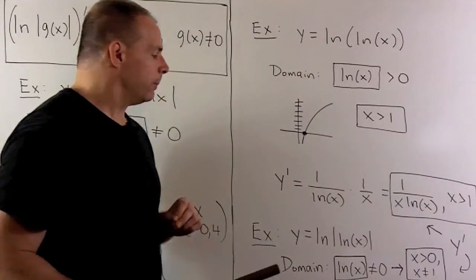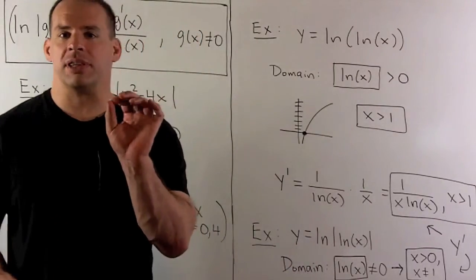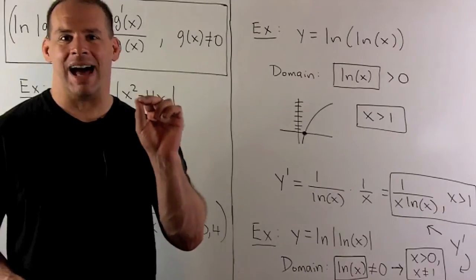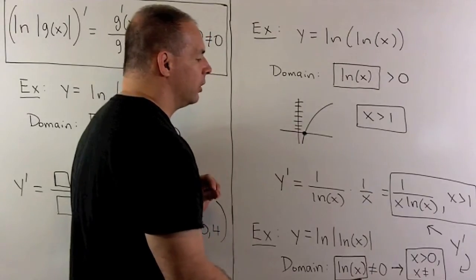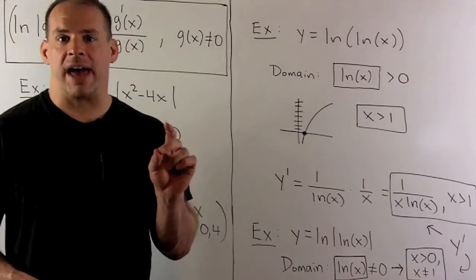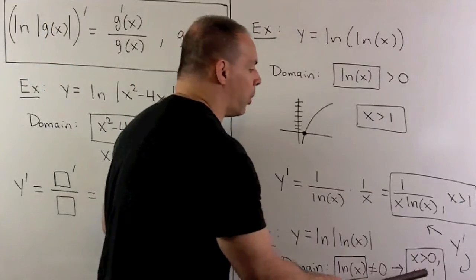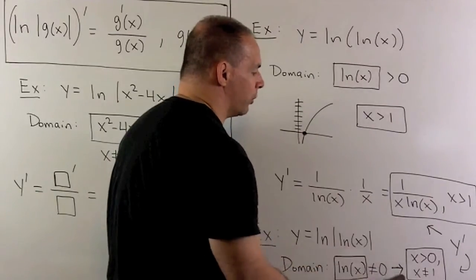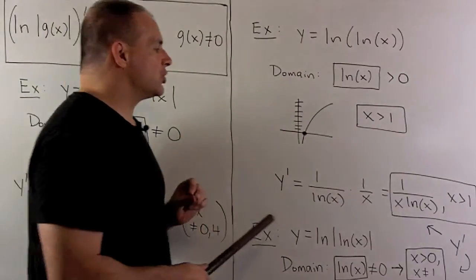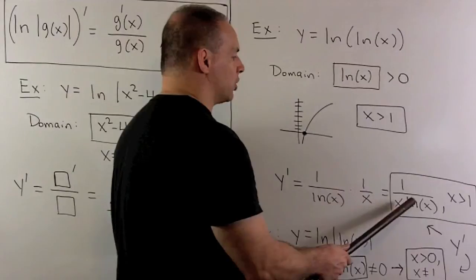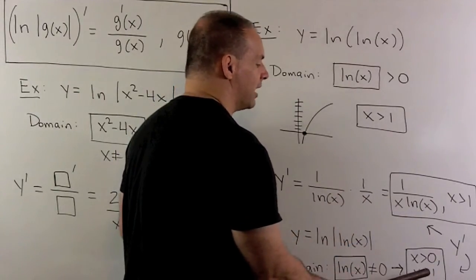Redoing with the absolute value: y equals natural log of the absolute value of natural log of x. For the domain, we only need what's in the box to be non-zero, so natural log of x not equal to zero — meaning we use the usual domain x greater than zero and throw away x equals one. The derivative is the same expression, one over x times natural log of x, but the restriction is now x greater than zero and x not equal to one.